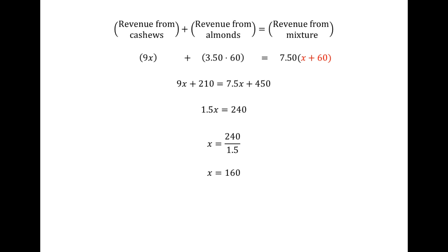So there's our solution. We conclude we need 160 pounds of cashews. Always put that English statement at the end. Moving on, the third problem is a similar type but involves percentages and chemistry. We want to know how much water must be evaporated from 40 ounces of a 4% salt solution to make a 12% salt solution.